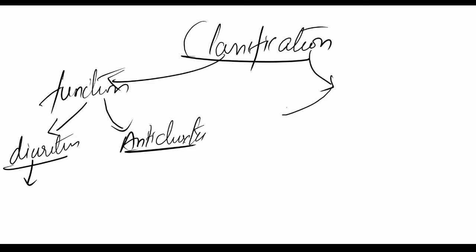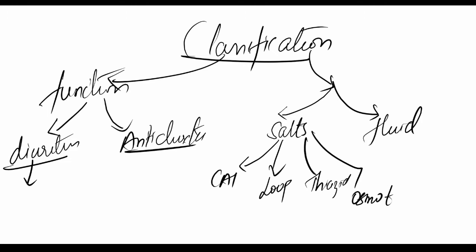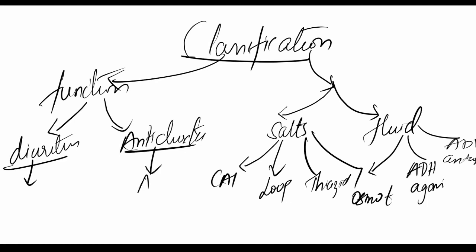Depending upon which part they act on — do they act on the salts present in our body or on the fluid — they can be further classified. Drugs acting on salts include carbonic anhydrase inhibitors, loop diuretics, thiazide diuretics, and osmotic diuretics. Drugs acting on fluid include osmotic diuretics, ADH agonists, and ADH antagonists. Anti-diuretic hormone is an example of an anti-diuretic, and all the salt-acting ones are examples of diuretics.